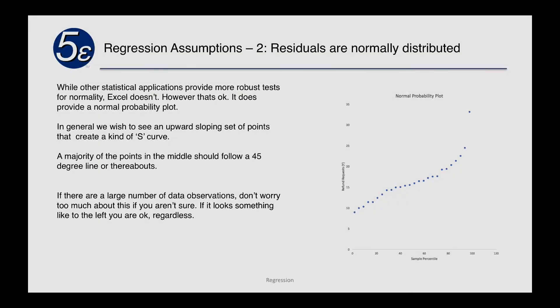Regression assumption two is that the residuals are normally distributed. While other statistical applications will provide more robust tests for normality, Excel does not. But that's okay. It does provide a normal probability plot.